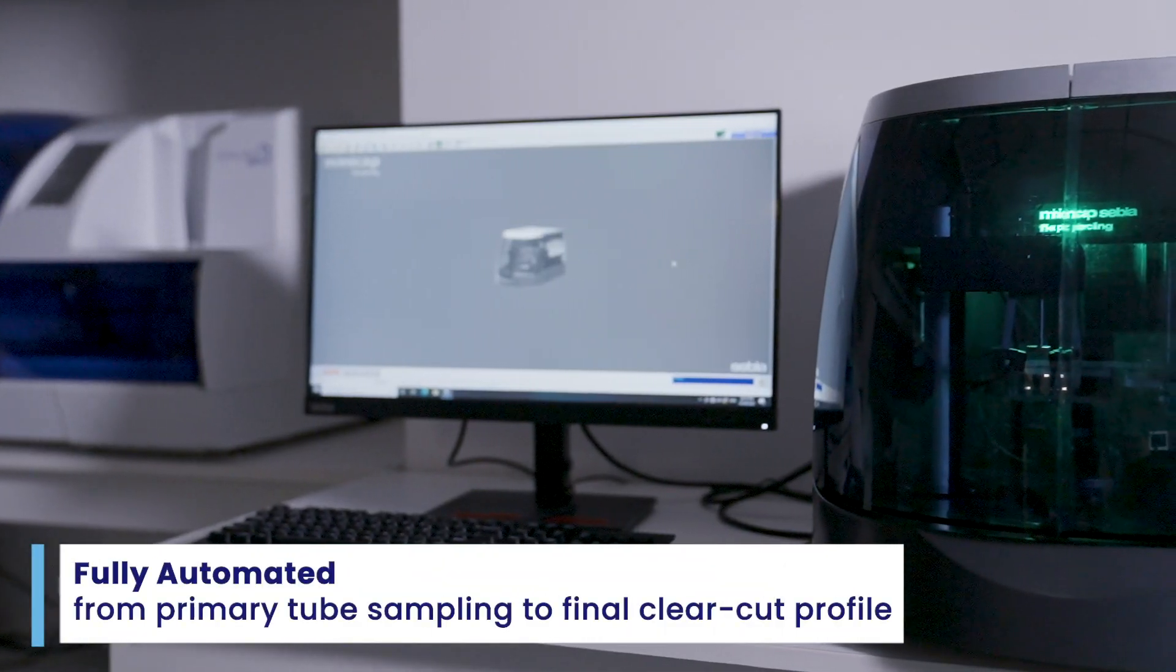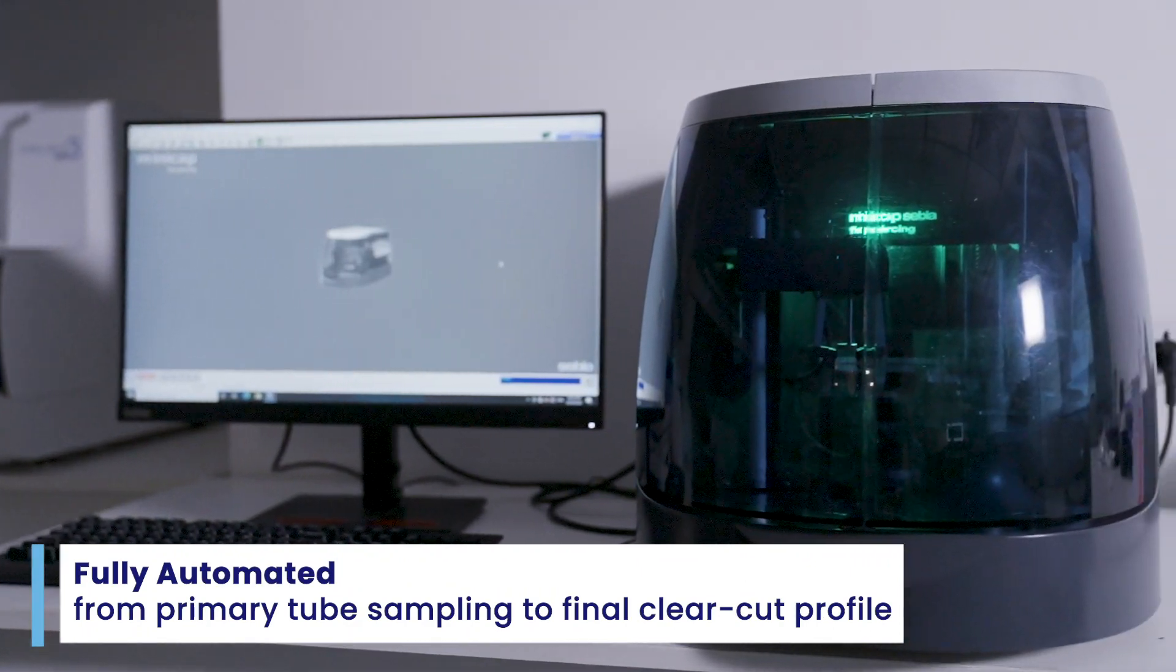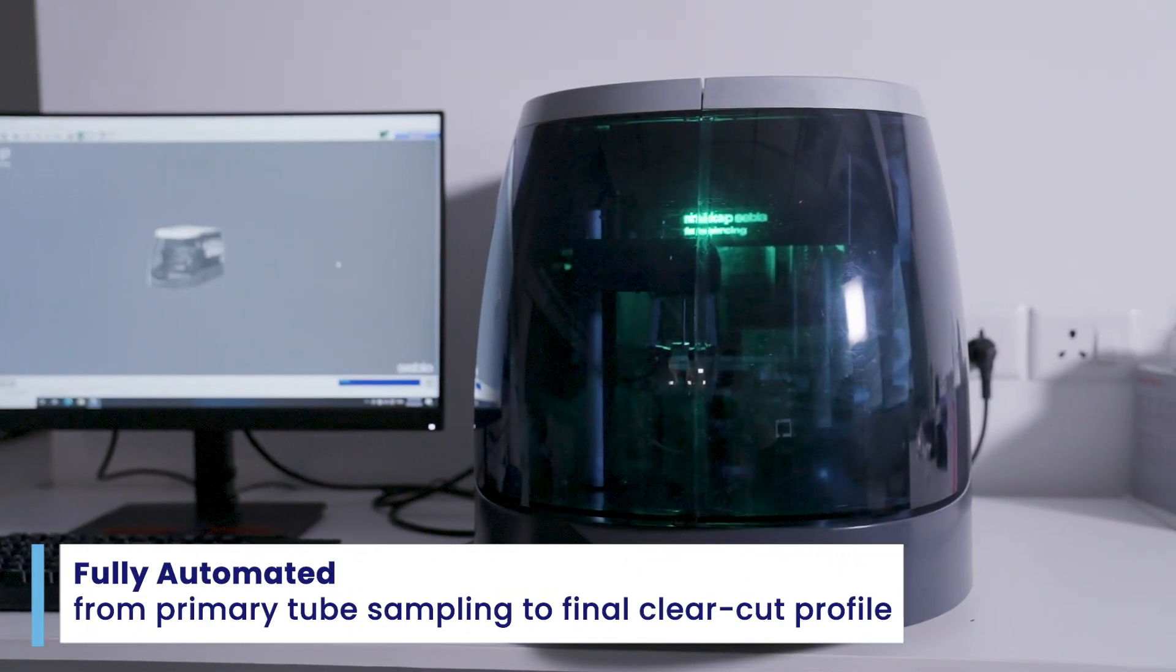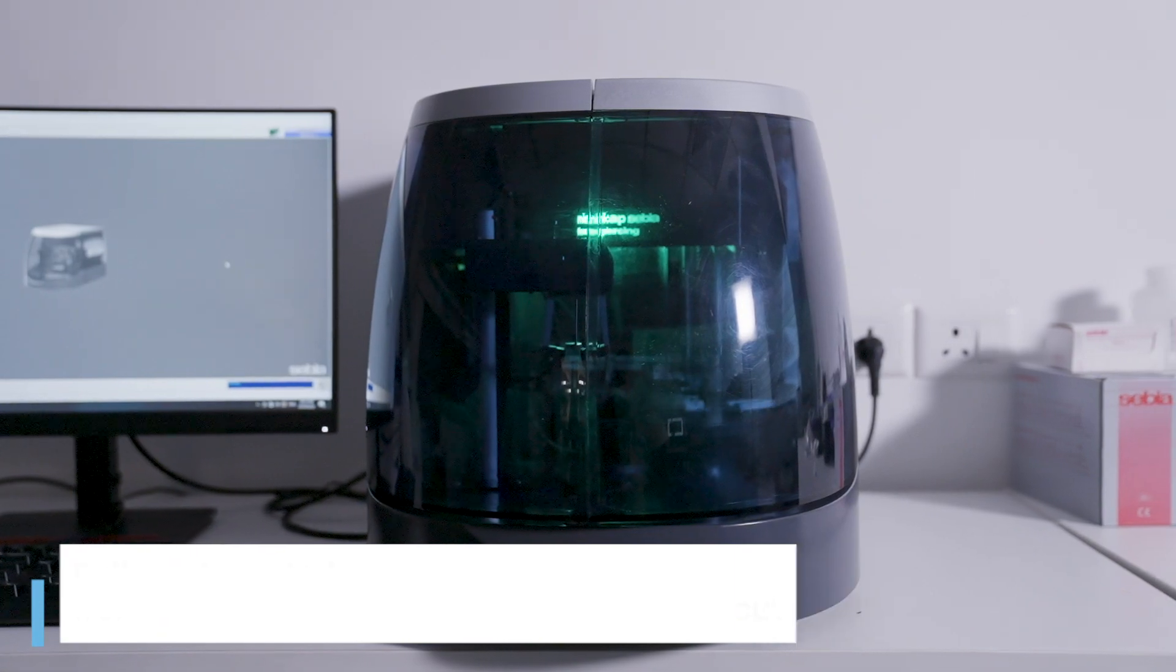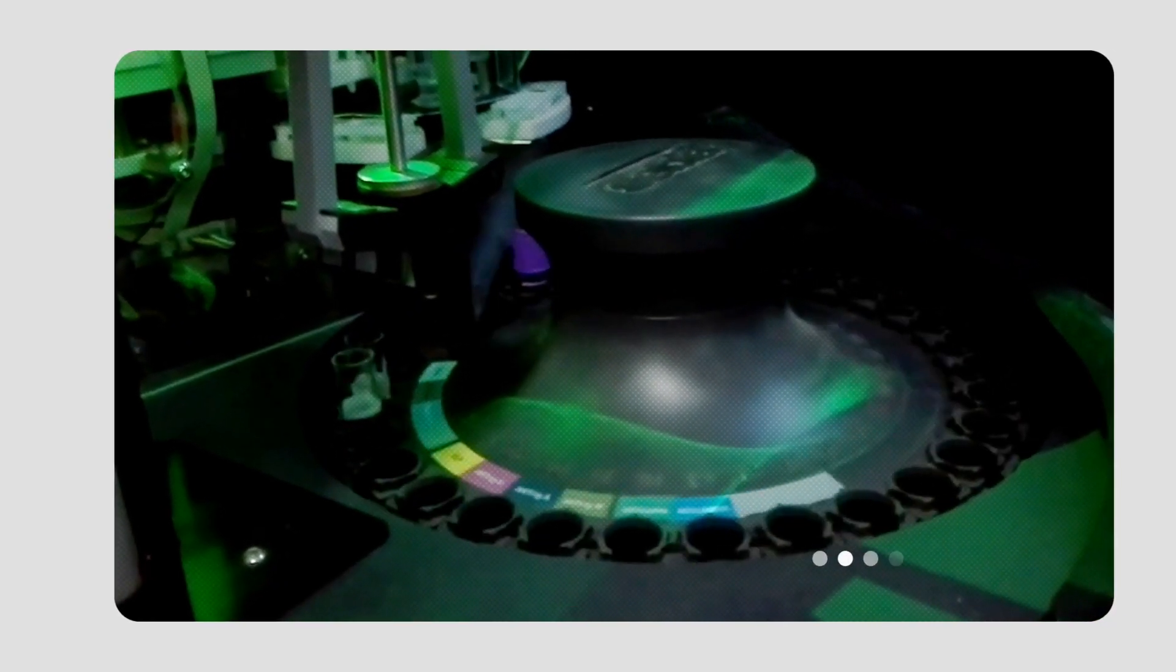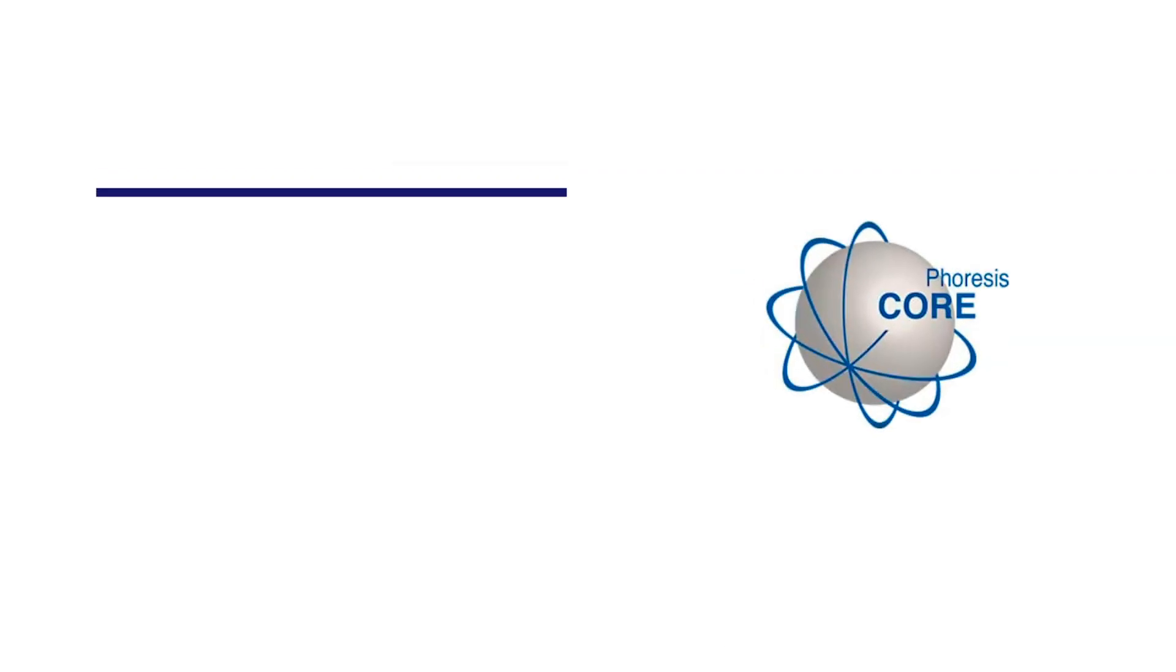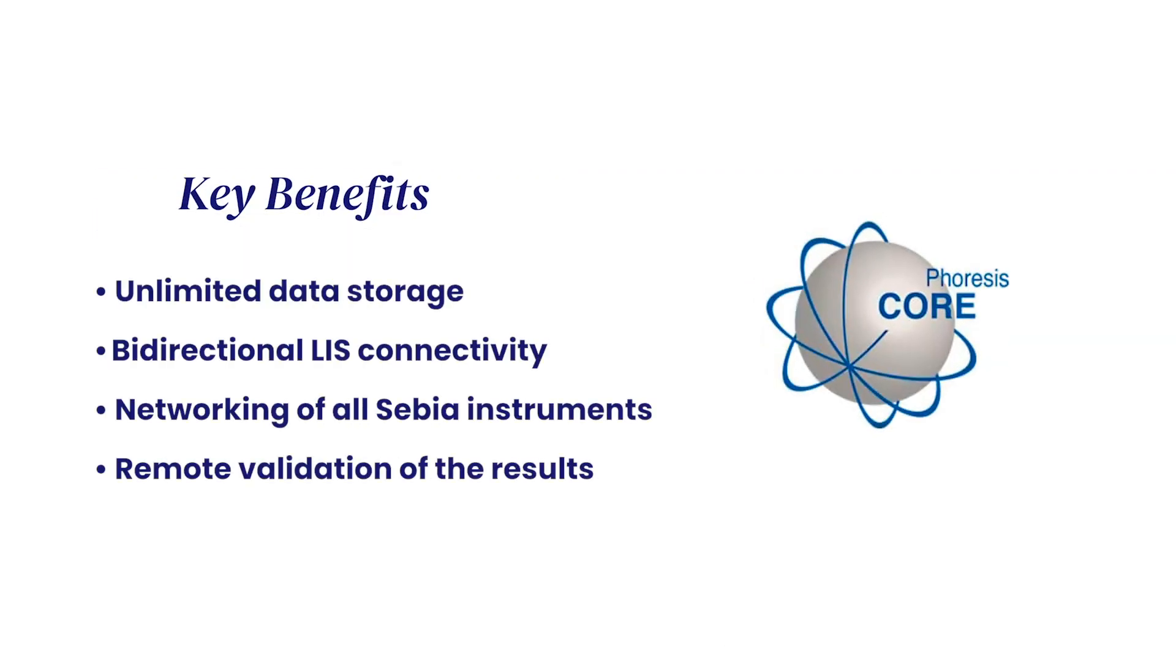Minicap instrument performs all steps automatically from primary tube sampling to final clear-cut profile with precise quantification and presumptive identification. CBR uses the same phoresis software on all gel and capillary electrophoresis platforms.